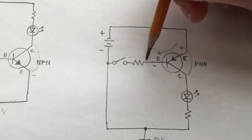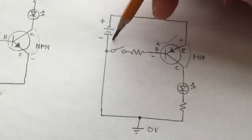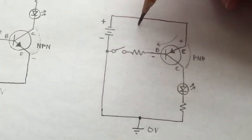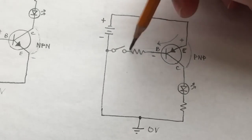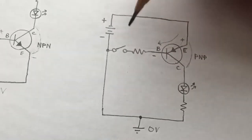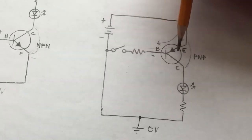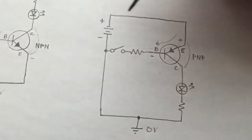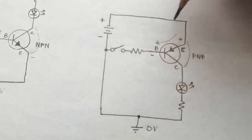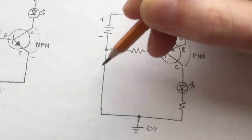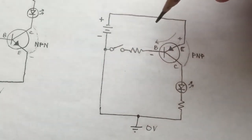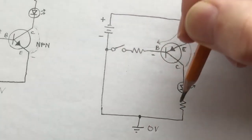This loop at the top is our low current control loop, and when the transistor is turned on, we have a much larger loop around the entire circuit — the power loop that lights the LED.